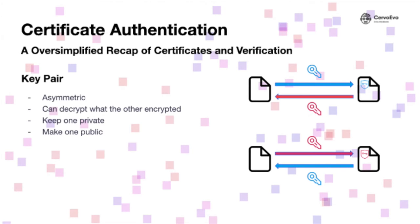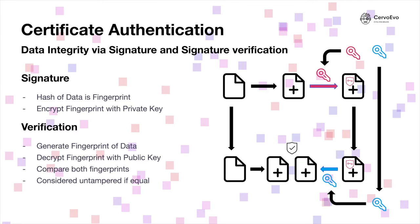Let's do a quick dive on certificate authentication to see what parts will interact. Certificate authentication relies on the properties of asymmetric encryption. In asymmetric encryption, you have two keys — you encrypt with one, decrypt with the other, and vice versa. You keep one private and share the other — make it public. The first thing we can do with keys is signature and verification of data integrity. You do a hash to produce a fingerprint, then encrypt that fingerprint using your private key — this is now a verifiable signature.